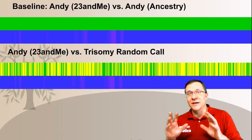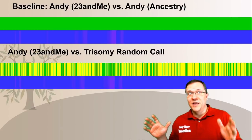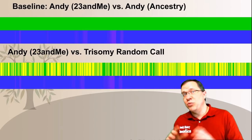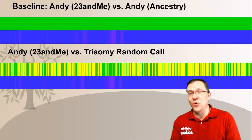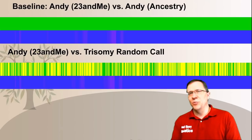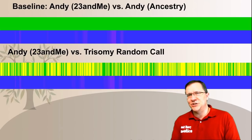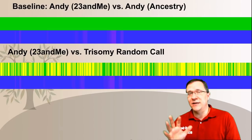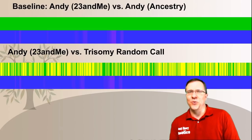Because of how this is distributed randomly throughout the chromosome, there's really no place on there that I can be considered a full match. So while my other 21 chromosomes show a full match, chromosome number 21 with this random call trisomy does not show a full match.